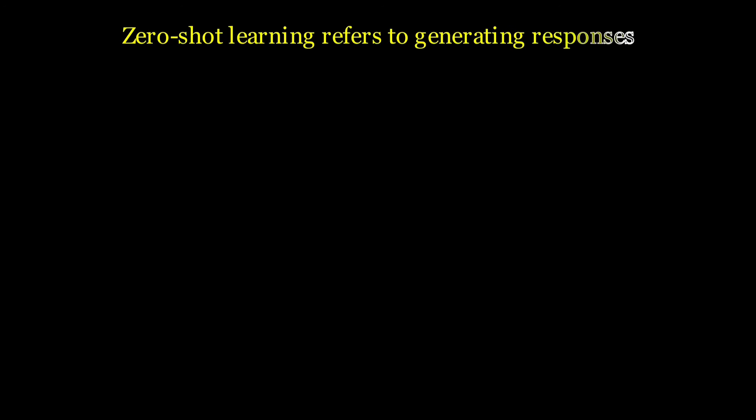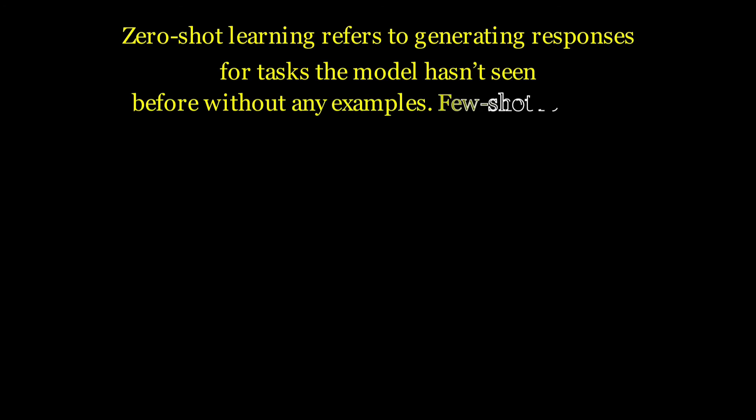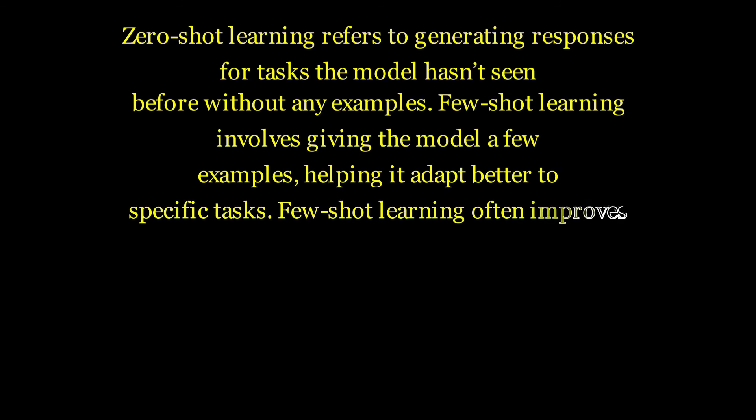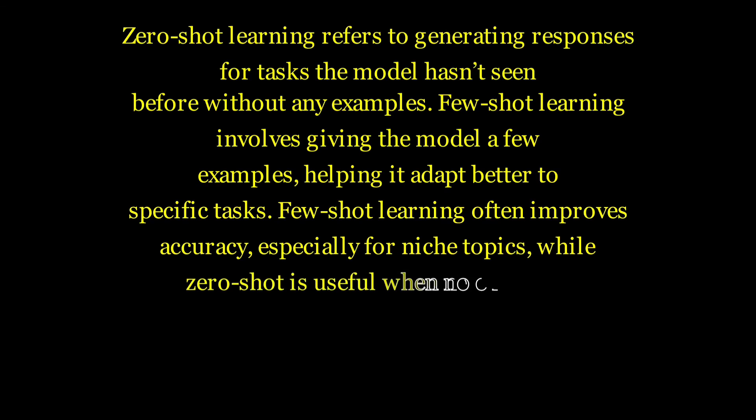What's the difference between zero-shot and few-shot learning in generative models? Zero-shot learning refers to generating responses for tasks the model hasn't seen before without any examples. Few-shot learning involves giving the model a few examples, helping it adapt better to specific tasks. Few-shot learning often improves accuracy, especially for niche topics, while zero-shot is useful when no examples are available.